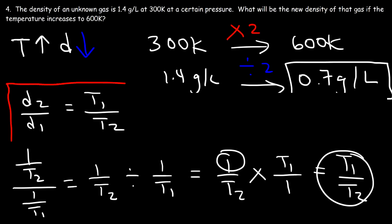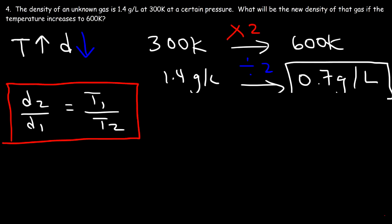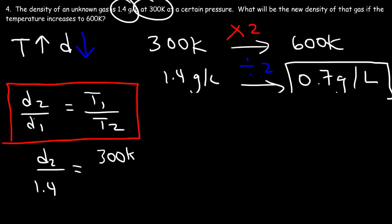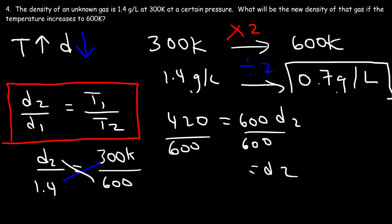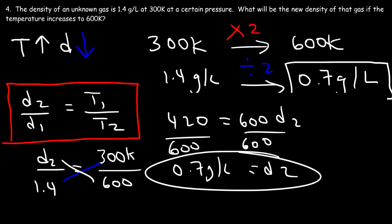So this is the equation you need to relate density and temperature of a gas, assuming everything else remains constant. We're looking for D2; D1 is 1.4, T1 is 300 Kelvin, and T2 is 600. Cross multiplying: 300 times 1.4 is 420, equal to D2 times 600. Dividing both sides by 600: 420 divided by 600 is 0.7. So we get the same answer. If you have nice numbers, use the intuitive method; otherwise, use the equation.